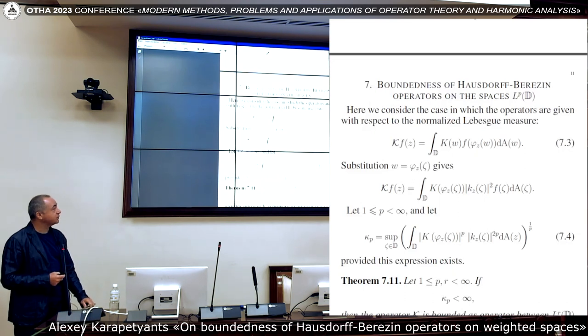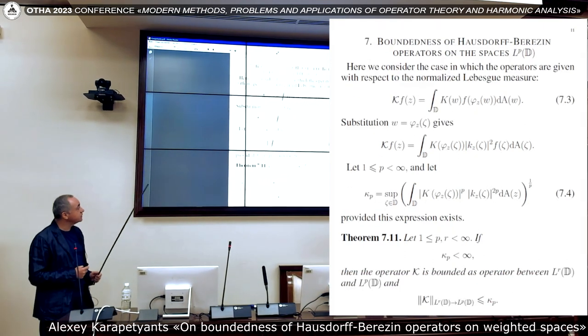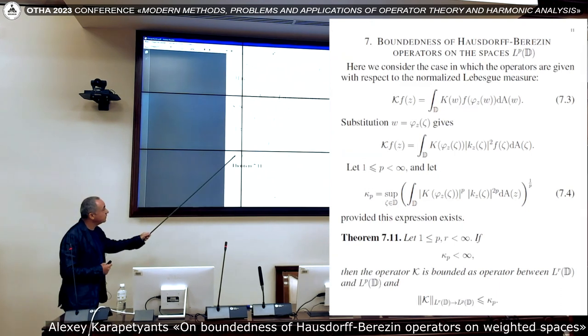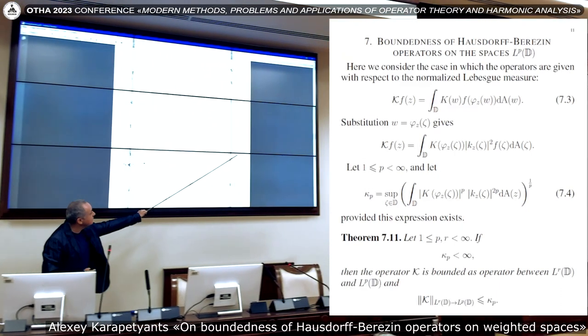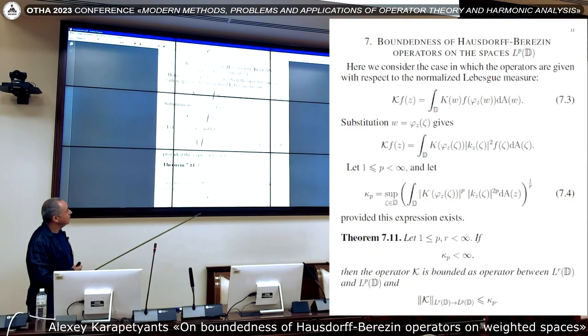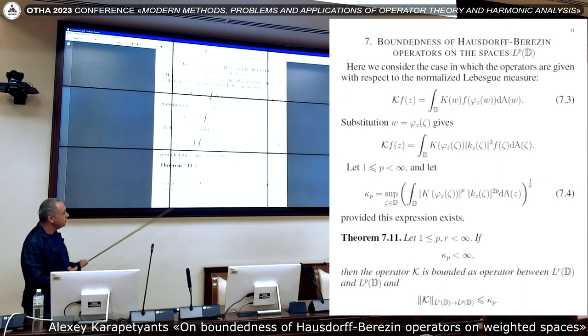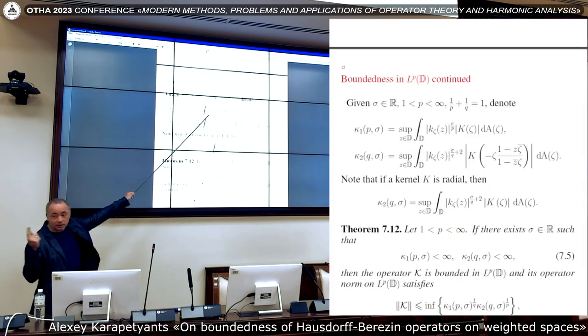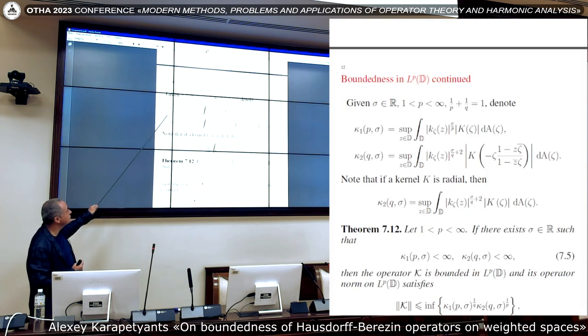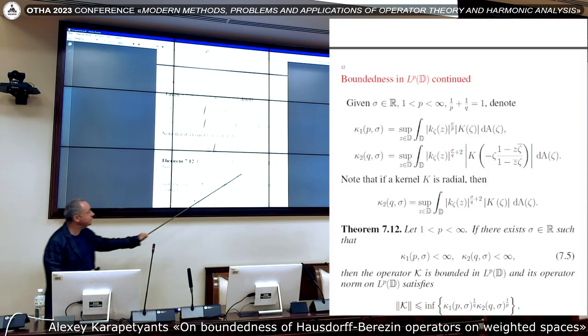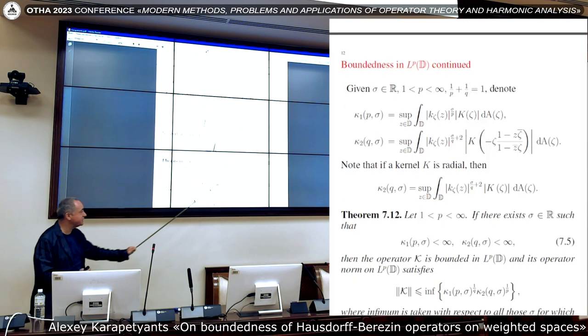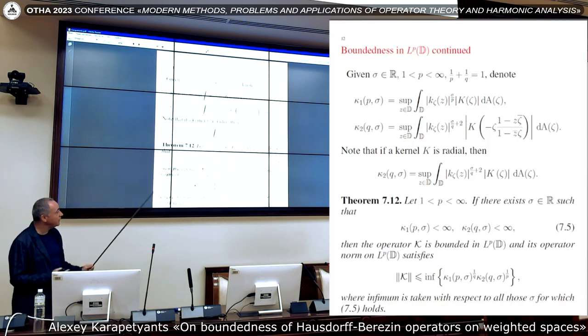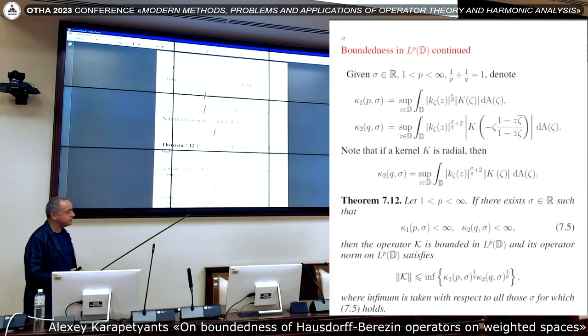And second approach, boundedness on technique of operators with homogeneous kernels. First, we introduce this construction K or κ_p. And if κ_p is less than infinity, then we have boundedness as it is written here. And also, using these normalized kernels, we can introduce these constructs. And the theorem of the sufficient condition says that if there exists σ, real numbers, that these are less than infinity, then the operator is bounded in L^p and operator norm does not exceed this number.